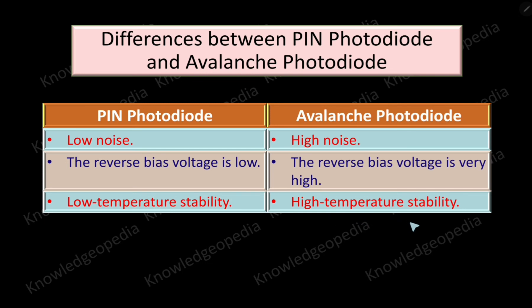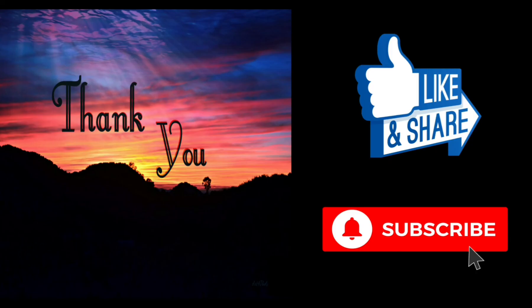PIN photodiode has low temperature stability but avalanche photodiode has high temperature stability. So these are the differences between PIN photodiode and avalanche photodiode. With this we have completed the photodiodes which are used as photodetectors and operate in photoconductive mode. Next class we will see what is photovoltaic mode and we will discuss about the solar cell.